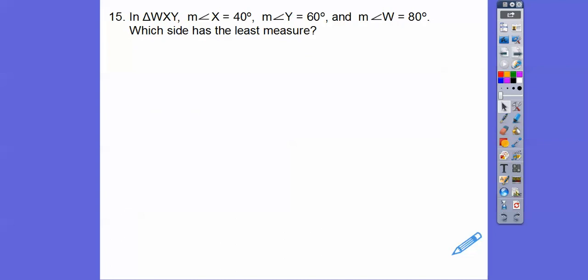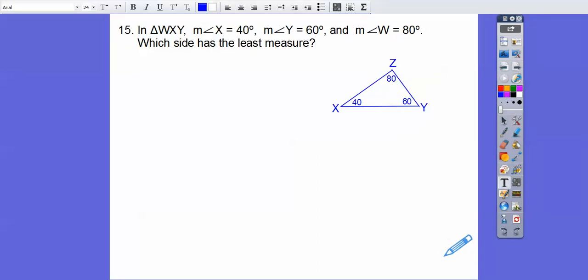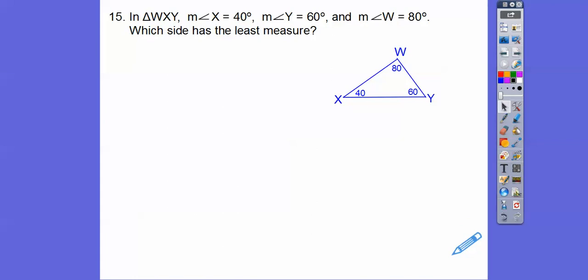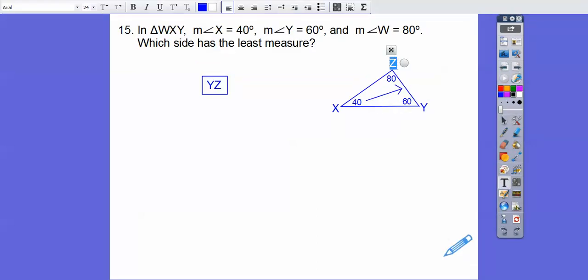We have a triangle WXY and put in X equals 40, Y equals 60, W equals 80. Which has the least measure? The one that's opposite the least side. So this is the smallest angle, which means this is the smallest side. So YW is the smallest side.